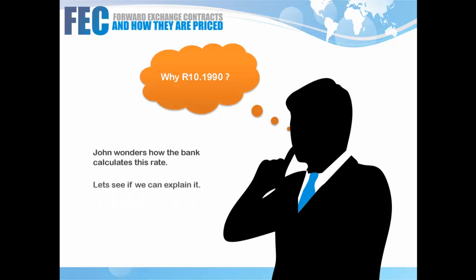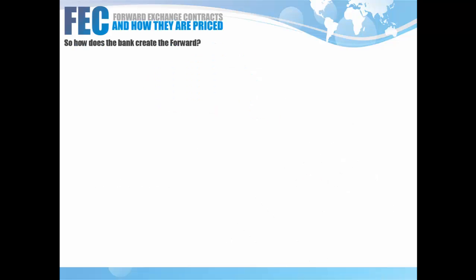John sits there and wonders: why is the bank quoting me 10.1990 when just a second ago they showed me a rate of 10? Let's see if we can explain this — how exactly does a bank create a forward?